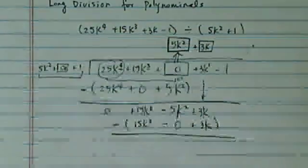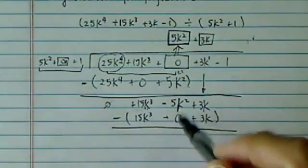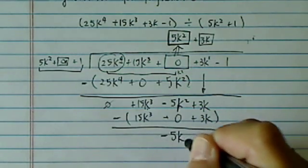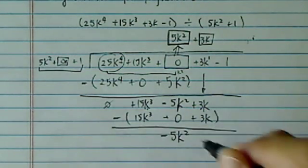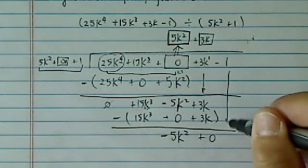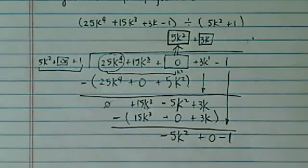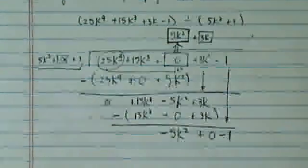This term goes away, minus 5 minus 0, minus 5k left out. 3k minus 3k, I have a 0, and then this minus 1 comes down nicely. See, once again, I still have my 3 terms to match those 3 terms over there.